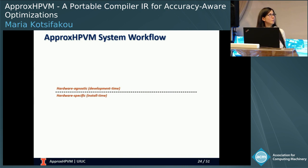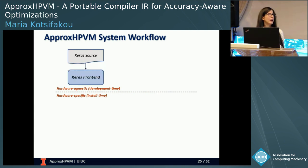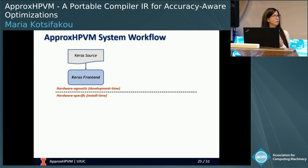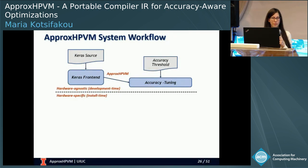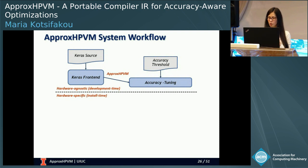Moving on to the ApproxHPVM system workflow: high-level programs are compiled through the Keras front-end and generate an ApproxHPVM IR. The IR, along with the user-provided accuracy threshold, are put through the accuracy tuning phase, which annotates the IR with the approximation metrics. Then the IR can be shipped.